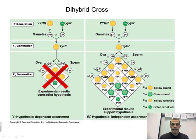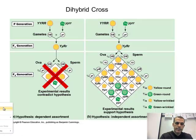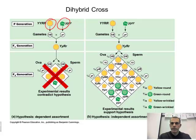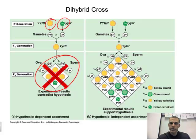With a monohybrid cross, we looked at one trait — either it was yellow or green, basically looking at color. Now what you notice here is we're going to be looking at the color and also the shape, so we're looking at green and yellow and also round versus wrinkled. If the alleles didn't separate independent of each other, you'd see one result, but we know the alleles actually will separate independent of each other. This is now what we call the dihybrid cross.